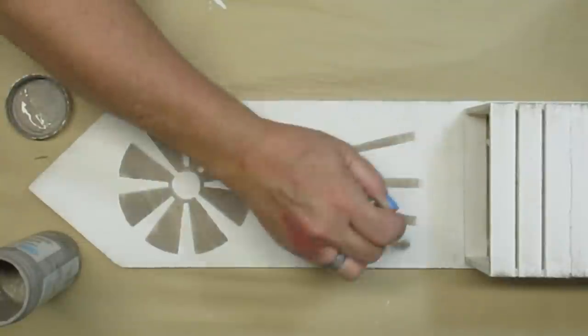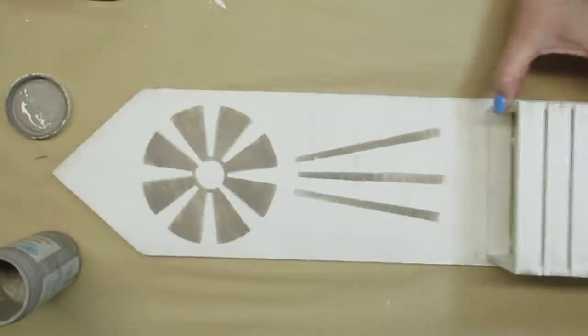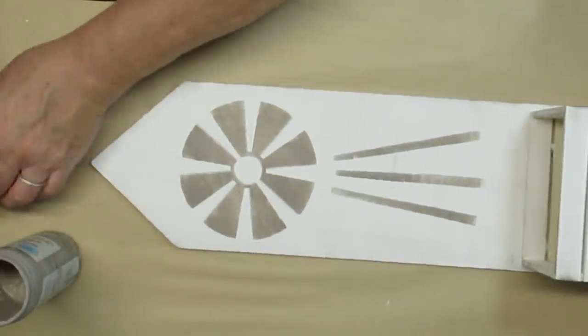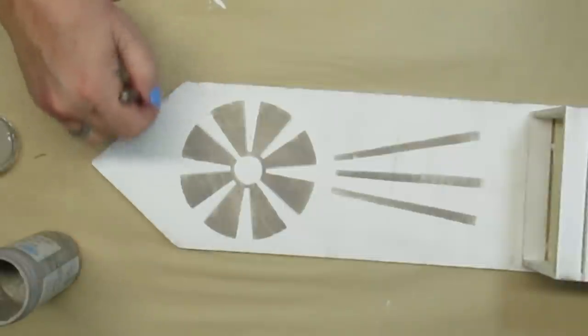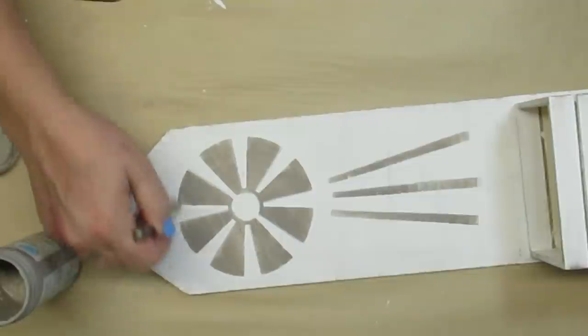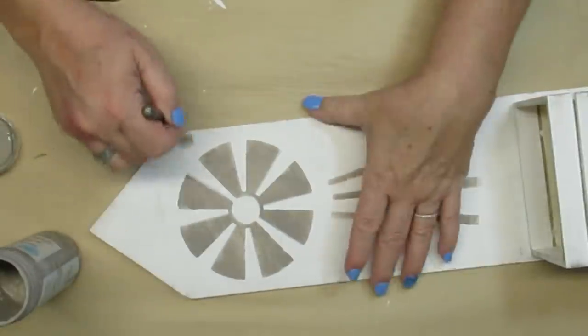When you're distressing sometimes less is more and it's always better to start off with a light touch. You can always add some more paint and go over it a second and third time until you achieve the look you want.